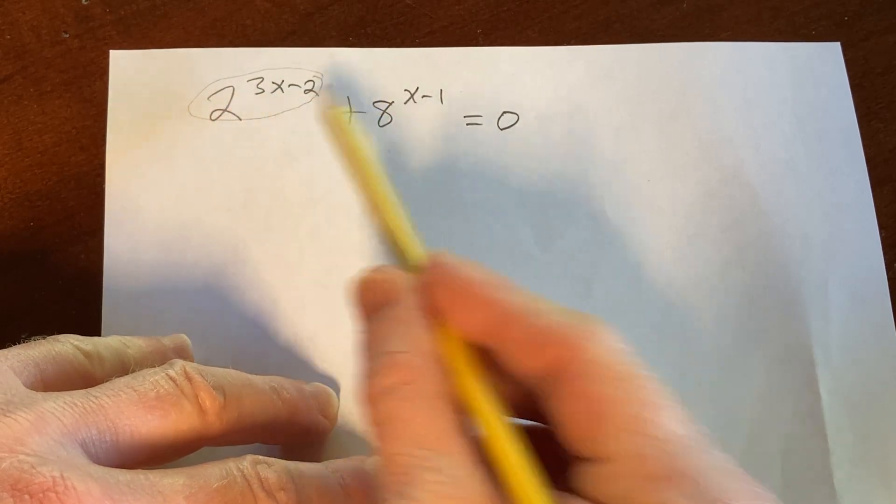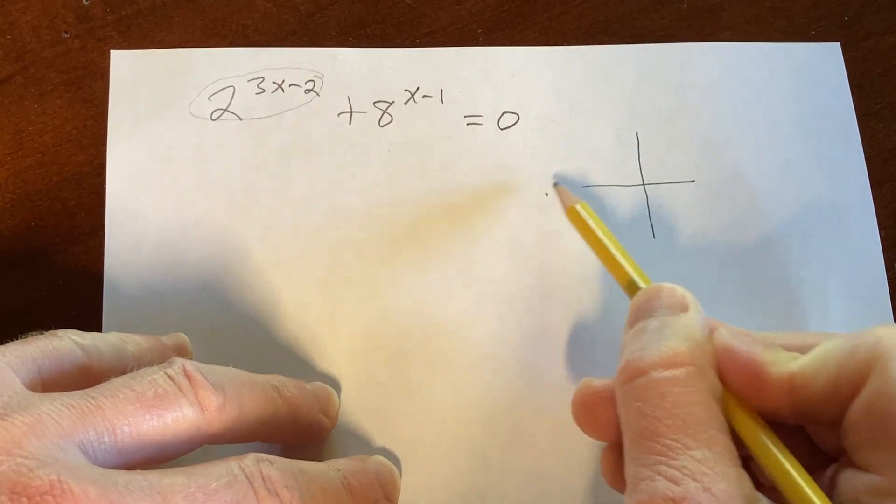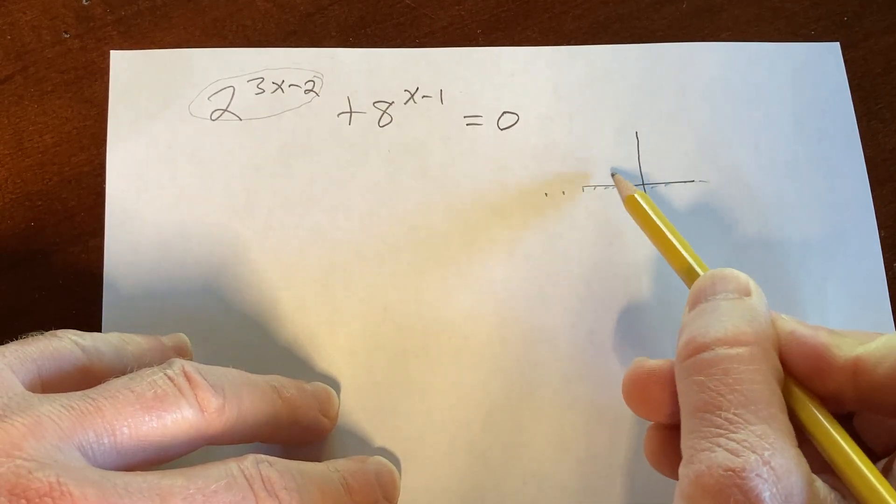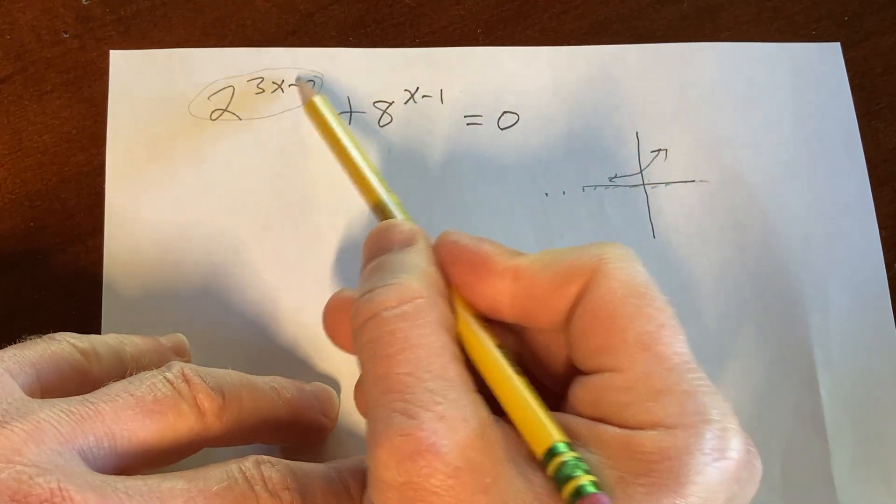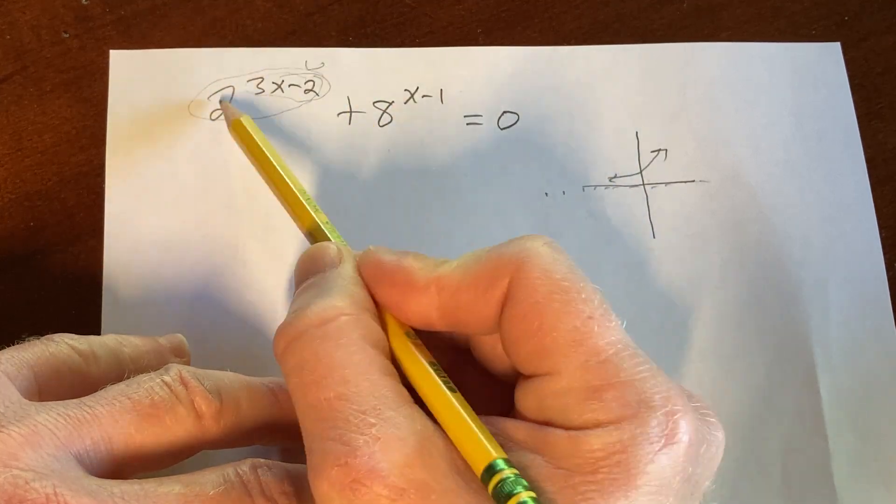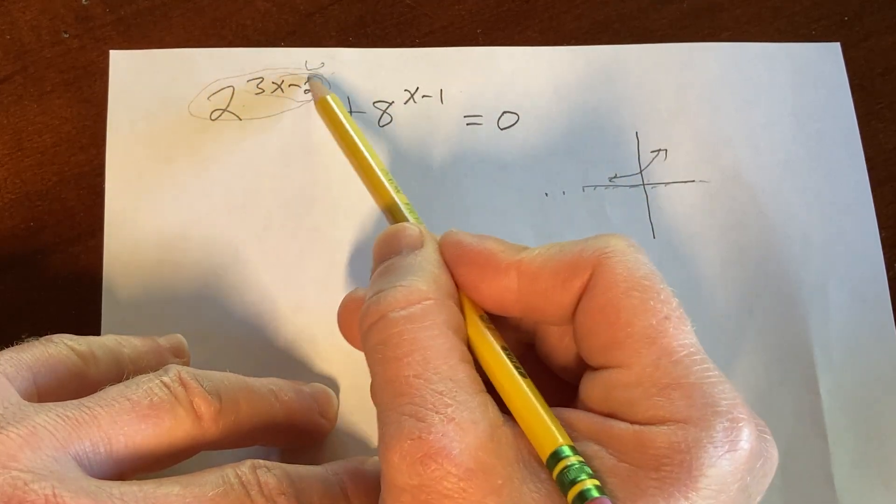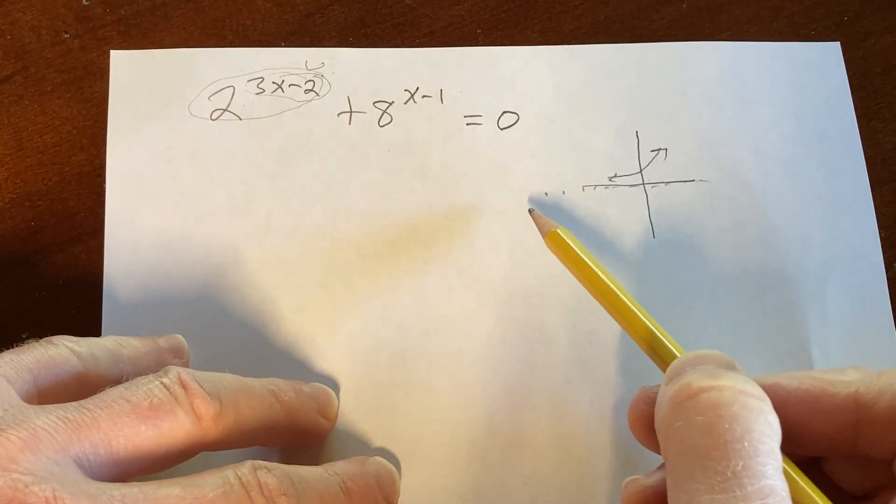Because the graph of, let's just say, 2 to the x for simplicity has a horizontal asymptote and it looks something like this. So it never actually becomes negative. Now this is not 2 to the x, it's 2 to the 3x minus 2, but you can replace this with a variable, say u, and you can consider it to be like 2 to the u, where u is some number, and no matter what, it's always going to be positive.